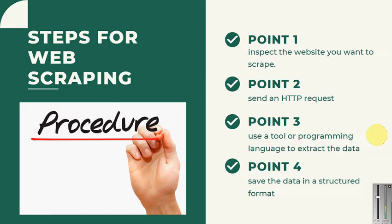Let's see what the steps are to start with web scraping. First, you need to inspect the website. The second step is to send an HTTP request — you simply hit a link and fetch the backend code of that website. The next phase is to extract the information using any programming tool or language. Then the fetched data is saved in a structured format, either in Excel, a database, or something else. Let's see how we can inspect a website.